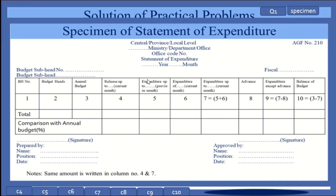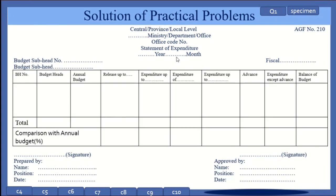In the specimen, we have to write the name of the current month in the month area, and also in column numbers 4, 6, and 7. In column number 5, we have to write the name of the previous month. The previous month of Ashar is Jestha, so we write Jestha in column number 5, and Ashar in all other month columns.